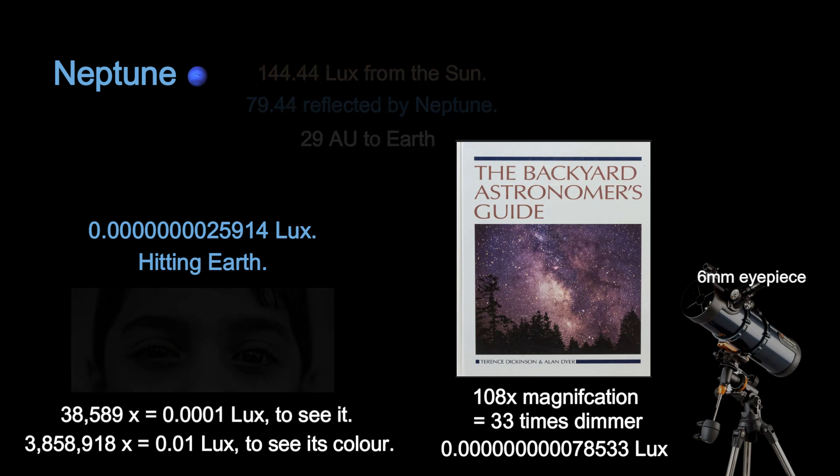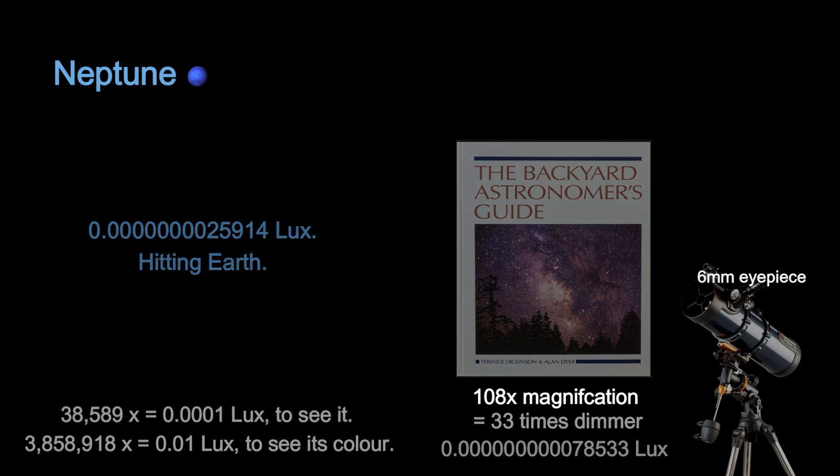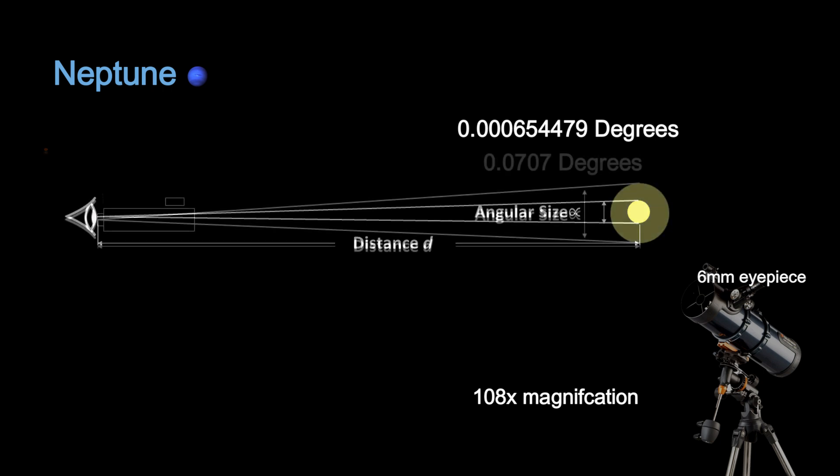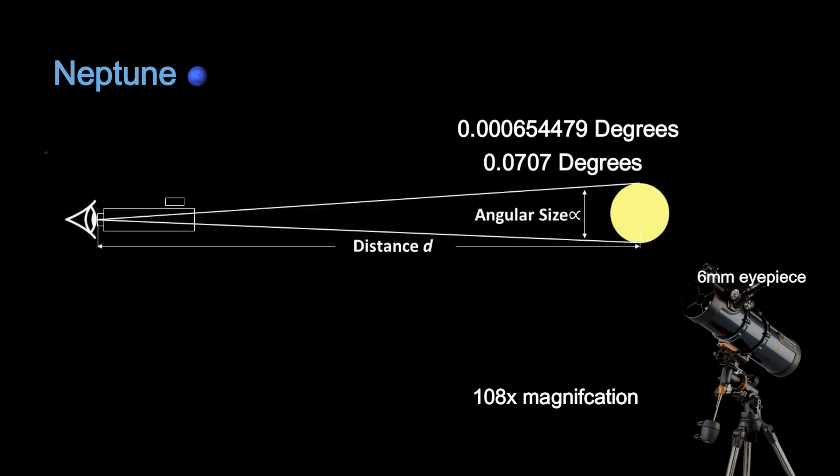The light gathering power of a telescope only helps if Neptune is closer and smaller. Its angular size is too small for our eyes to resolve. Using a telescope with 108 times magnification gives a larger angular size and makes it visible.